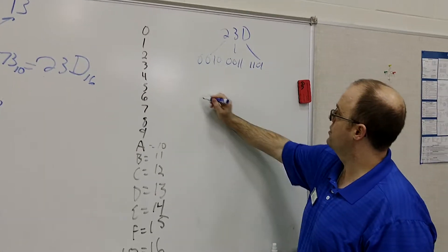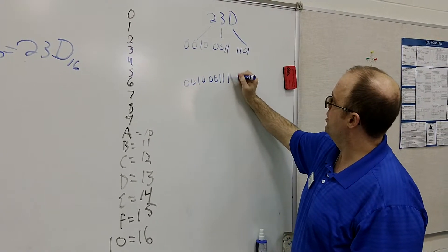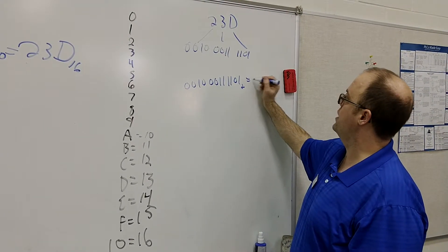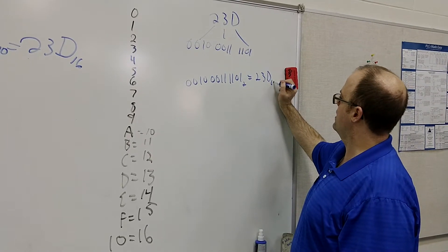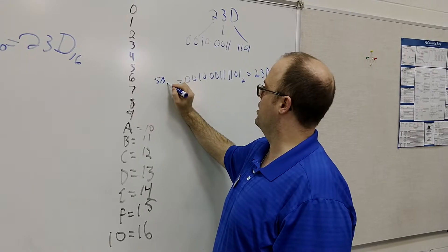So this here, so 0, 0, 1, 0, 0, 0, 1, 1, 1, 1, 0, 1 base 2 equals 23D base 16 or 573 base 10.